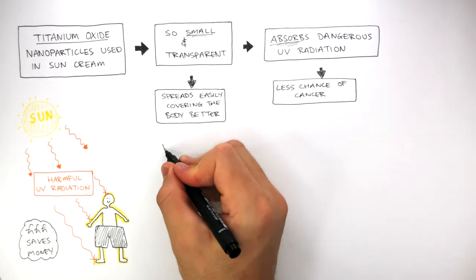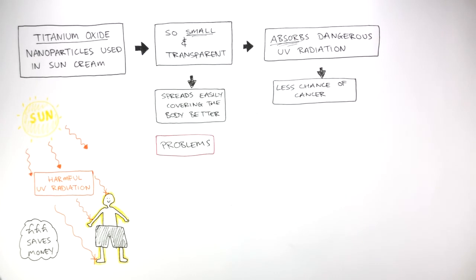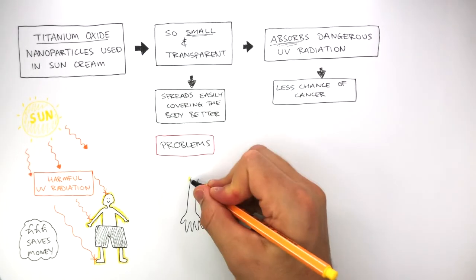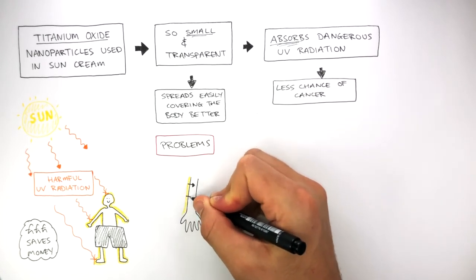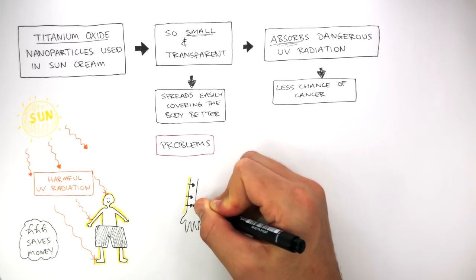However, there are problems associated with titanium oxide nanoparticles. When the sun cream is applied to the skin, the titanium oxide nanoparticles are so small, they pass through the pores of the skin.